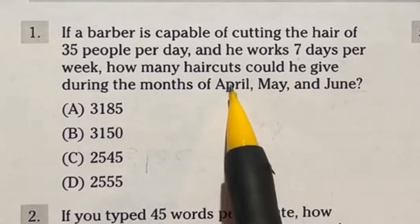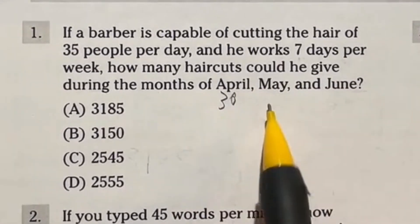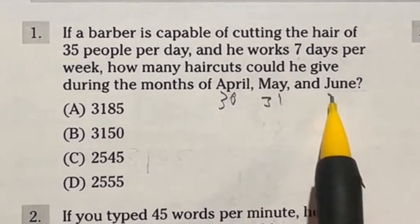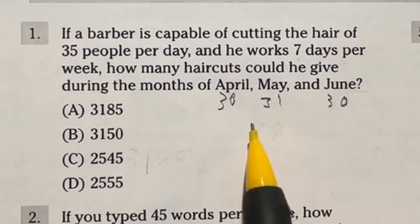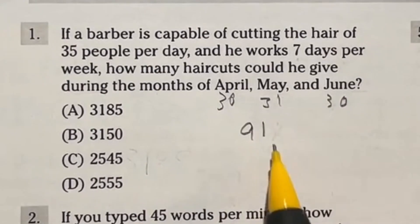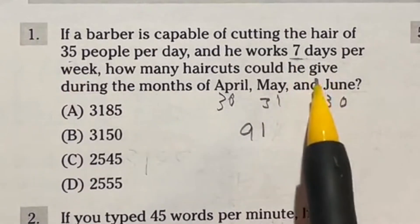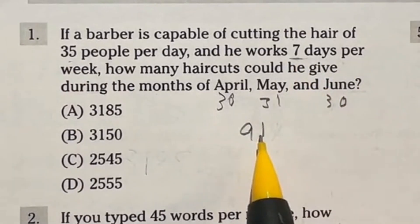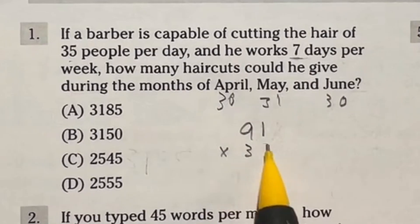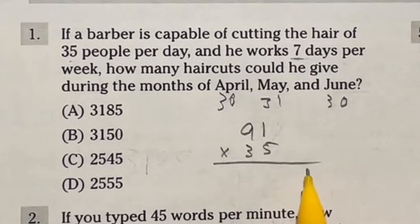If you did a little knuckle trick, you would know that April has 30 days, May has 31 and June has 30. So all together, we are looking at 91 days here. Now he does cut 35 per day and no days off working seven days a week. So we're just going to take this 91 and multiply it by that 35. There is no calculator here. So you got to do this by hand.